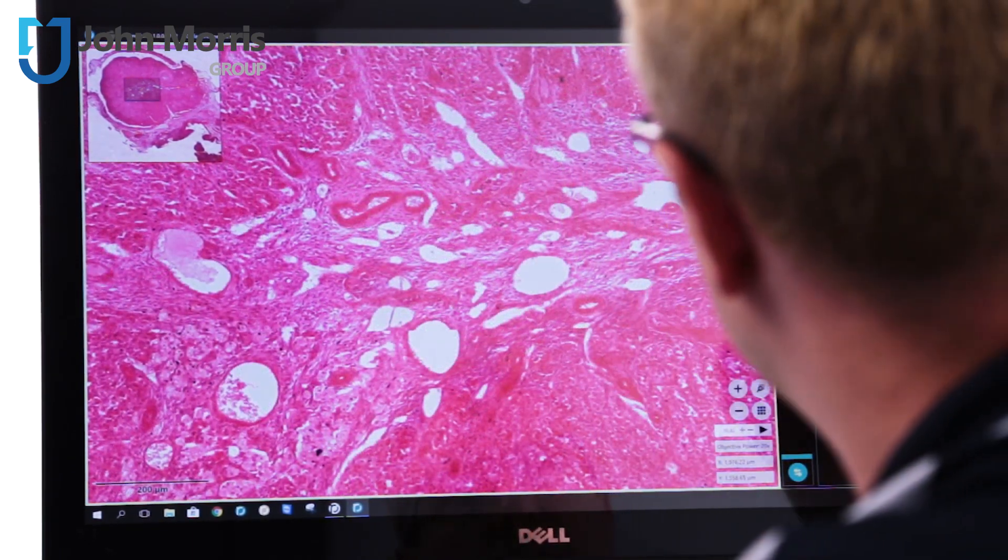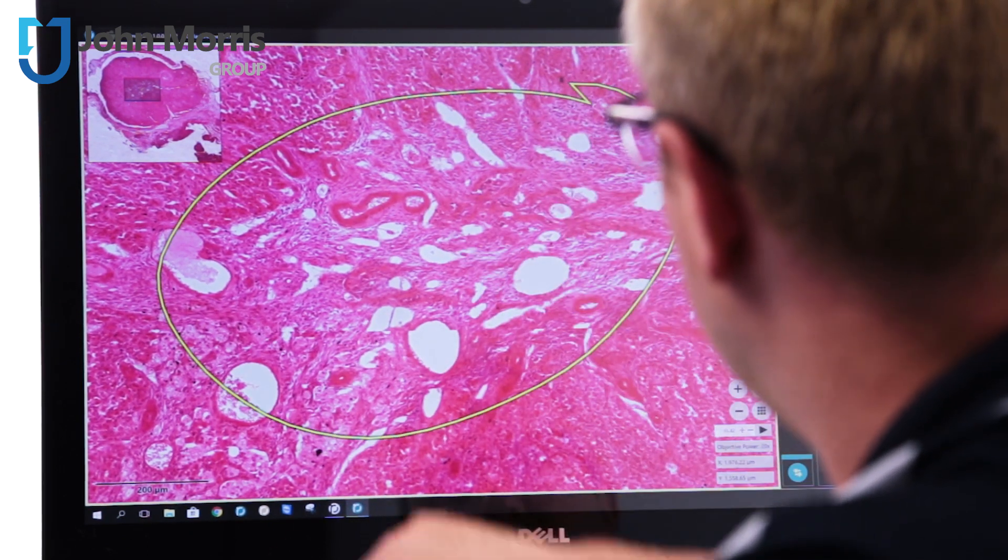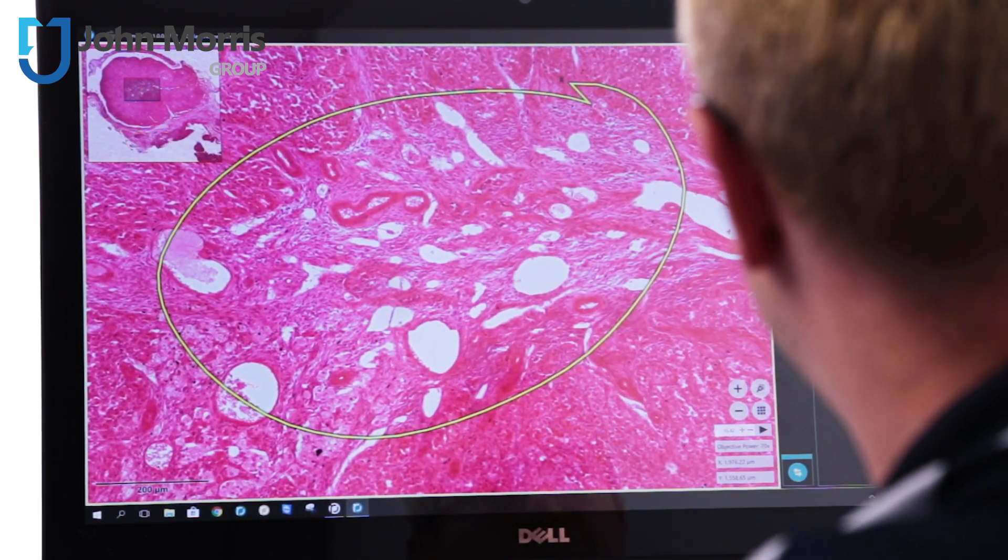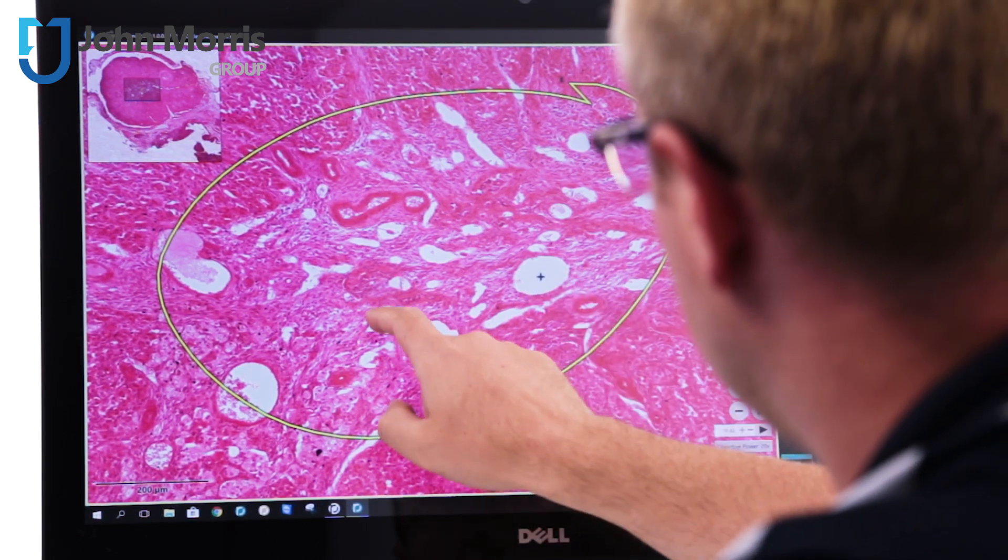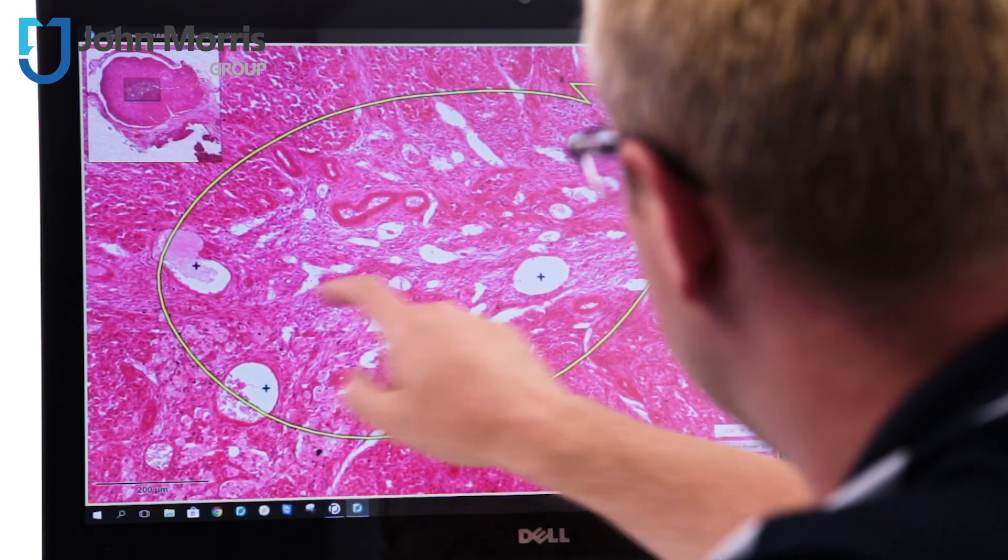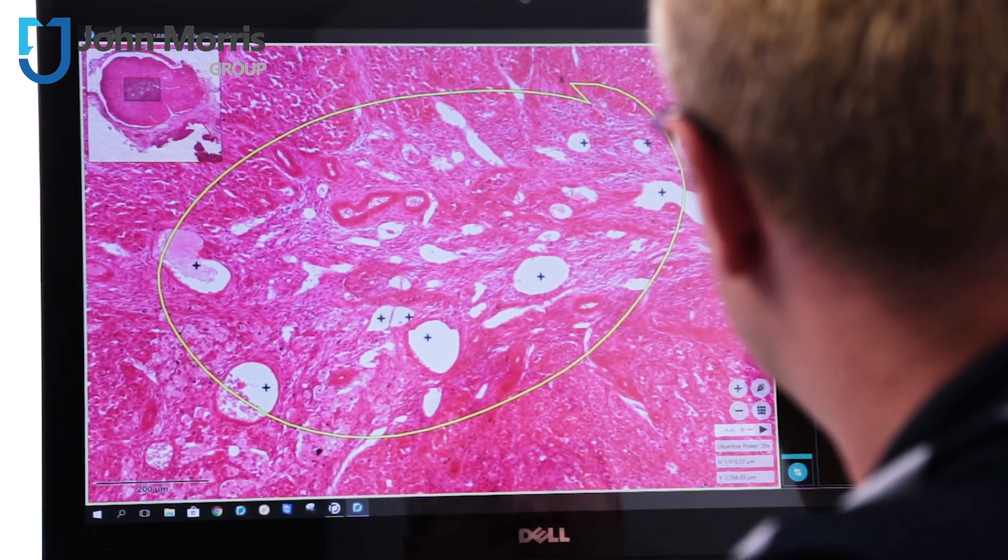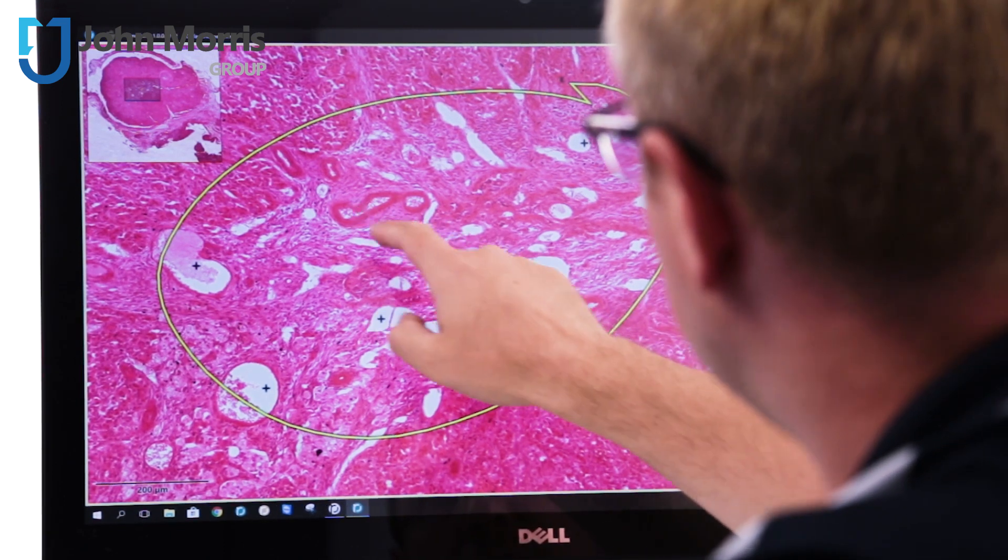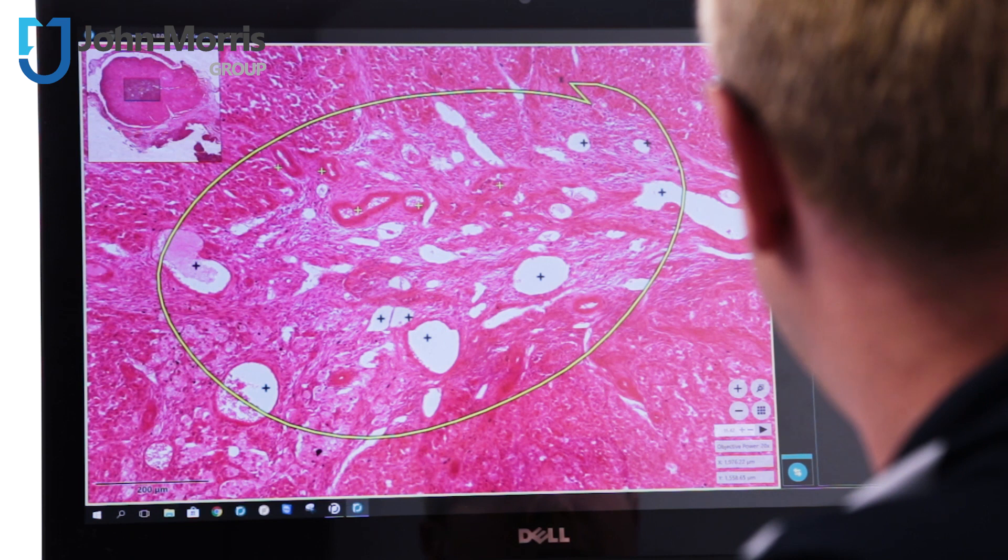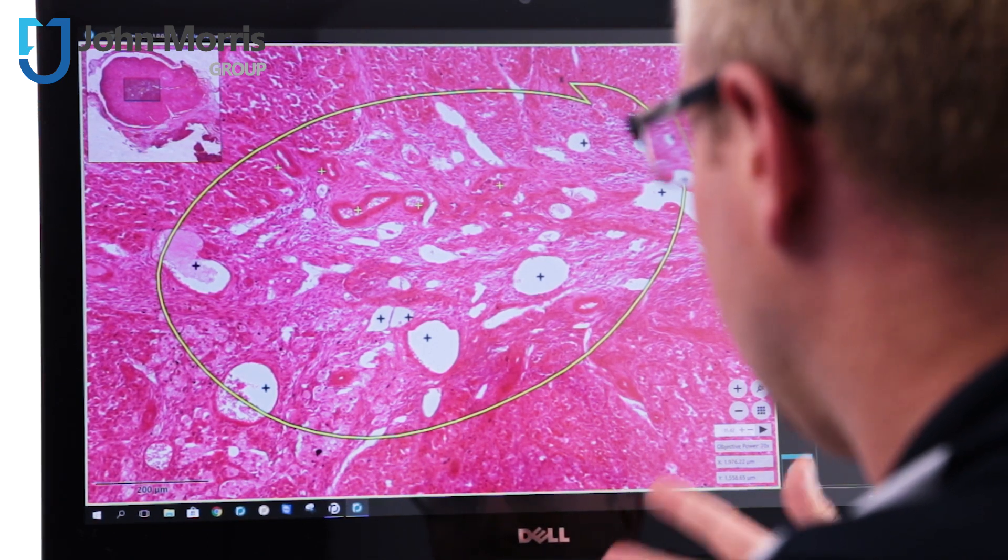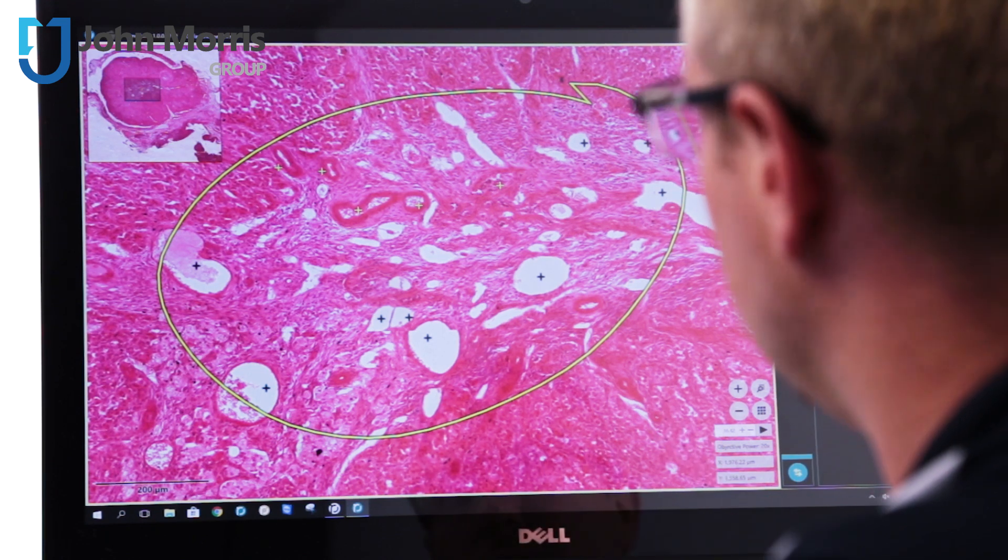Within the annotation mode we've also got a handy counting feature so if we define the area here you can see we can label different species and in species number one we might identify some, it'll count them, species two you might say these ones here and you can see it's actually tallying them up along the right side and we can export all of this for later observation by somebody else.